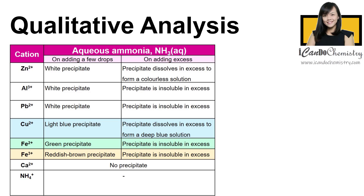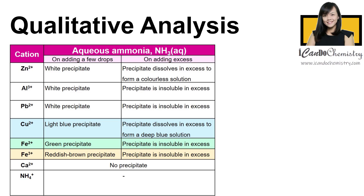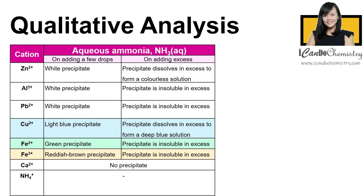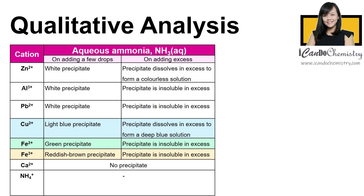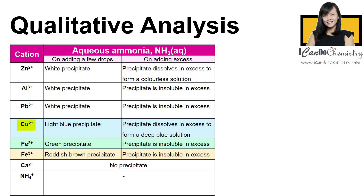In this video we'll be focusing on qualitative analysis. Qualitative analysis is a process of identifying unknown substances in a solution. At all levels, students are required to describe the use of aqueous sodium hydroxide and aqueous ammonia to identify different ions such as aluminium, ammonium, calcium, copper(II), iron(II), and iron(III) ions.